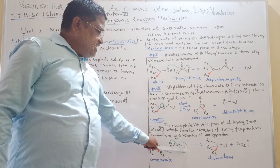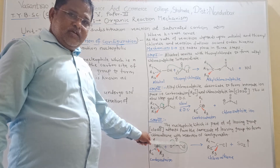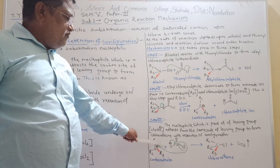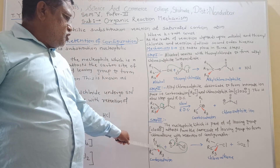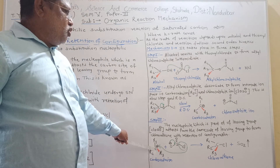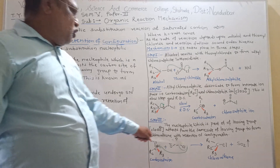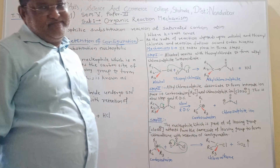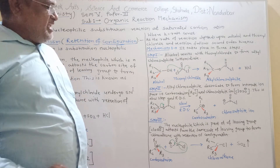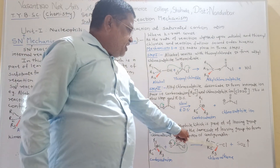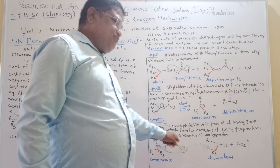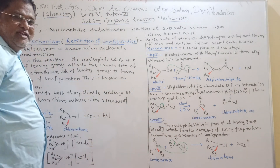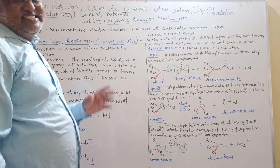In the third step, the nucleophile Cl⁻, which is part of the leaving group, attacks from the same side as the leaving group onto the carbocation to form the chloroalkane with retention of configuration. Finally, the configuration of the product is the same as compared to the reactant alcohol. Hence, in the SNI mechanism, we get retention of configuration.